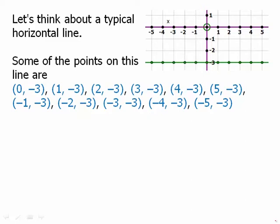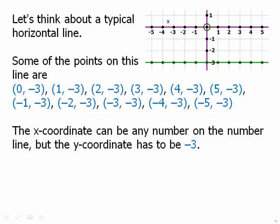(-1, -3), (-2, -3), etc. The x-coordinate can be any number on the number line. It could even be fractions. But notice that the y-coordinate is locked in place. The y-coordinate has to be -3.